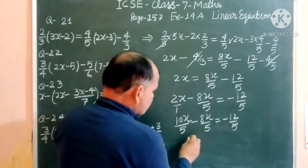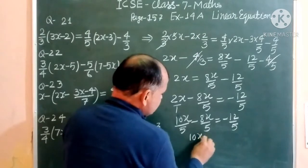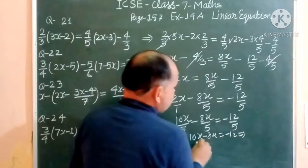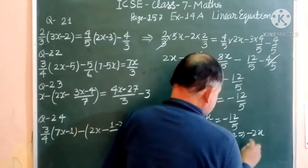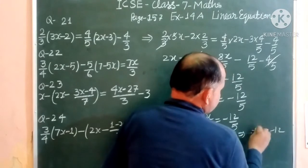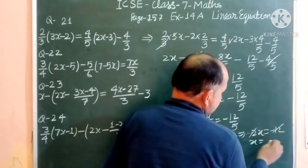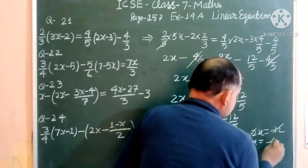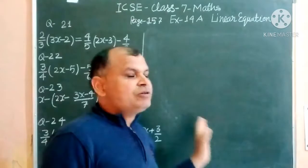After cancellation: 10x - 8x = -12, which gives 2x = -12. Dividing both sides by 2, we get x = -6. So the value of x for question 21 is -6.